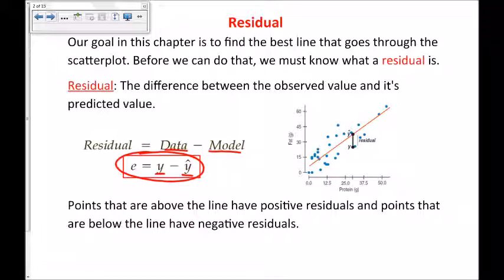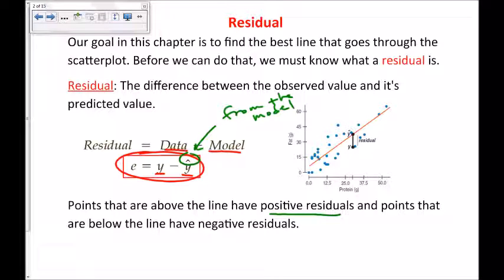In this unit, hats will come from the model, meaning our line of best fit. It will not surprise you to know that points that are above the line have a positive residual, and points that are below the line have a negative residual. It's a way of measuring how different each point is from the line of best fit that we've drawn.